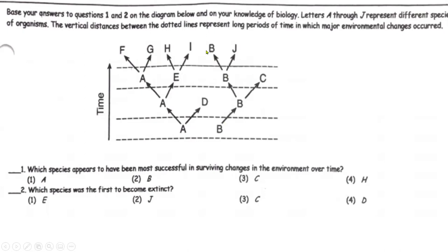Other species, like species D, were unable to evolve and change and make it to present time, so you see the line kind of ends there. That's when a species becomes extinct — when it's no longer present in present time. We call it extinction. Its line ended in the past. This is how we depict it in a time cladogram.